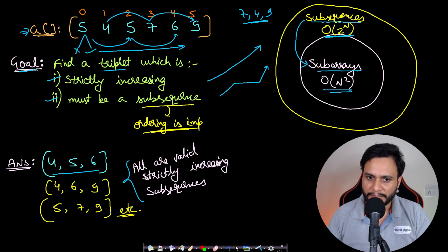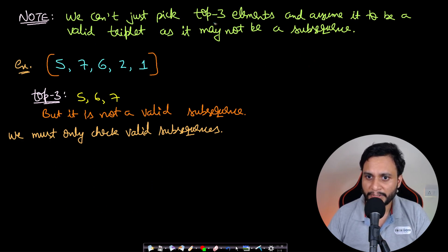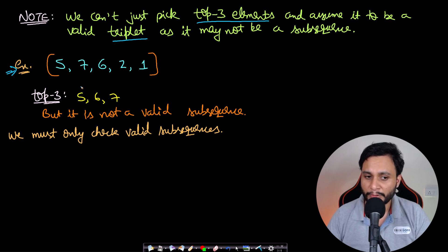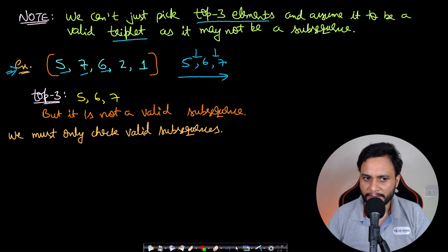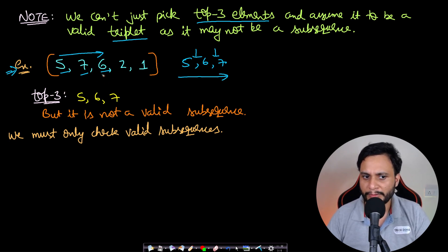We cannot just pick the top three largest elements and assume a valid triplet, as they may not form a valid subsequence. For example, the top three elements in this example would be 5, 6, 7 — but moving left to right we would get 5, 7, 6, which violates the ordering. So this would not be a valid triplet, and in that case you must return false.